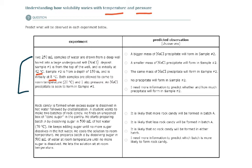So what is our predicted observation? We are supposed to choose one. If I'm going to predict an observation, the observation that I would predict would be this one: no precipitate would form in sample two. Let's see why.